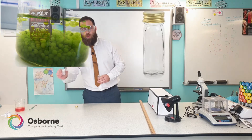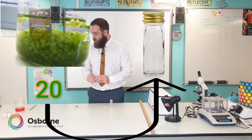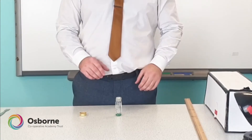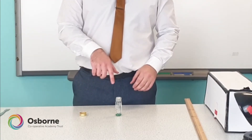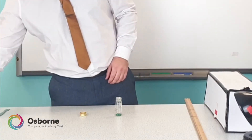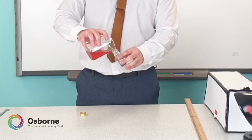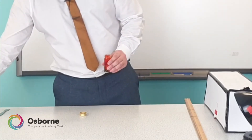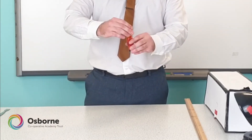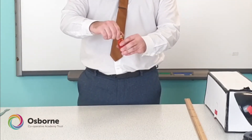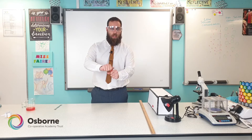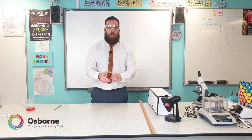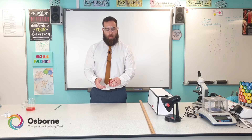We're going to put 20 of these algal balls into the Bijou bottle using our spatula. Now we've got our algal balls in our Bijou bottle, we're going to add the indicator and fill it to the top. This indicator will detect the amount of carbon dioxide present in the solution — it will change colour depending on the amount of CO₂. It will go yellow if there is more carbon dioxide present, and purple if there is less carbon dioxide present.